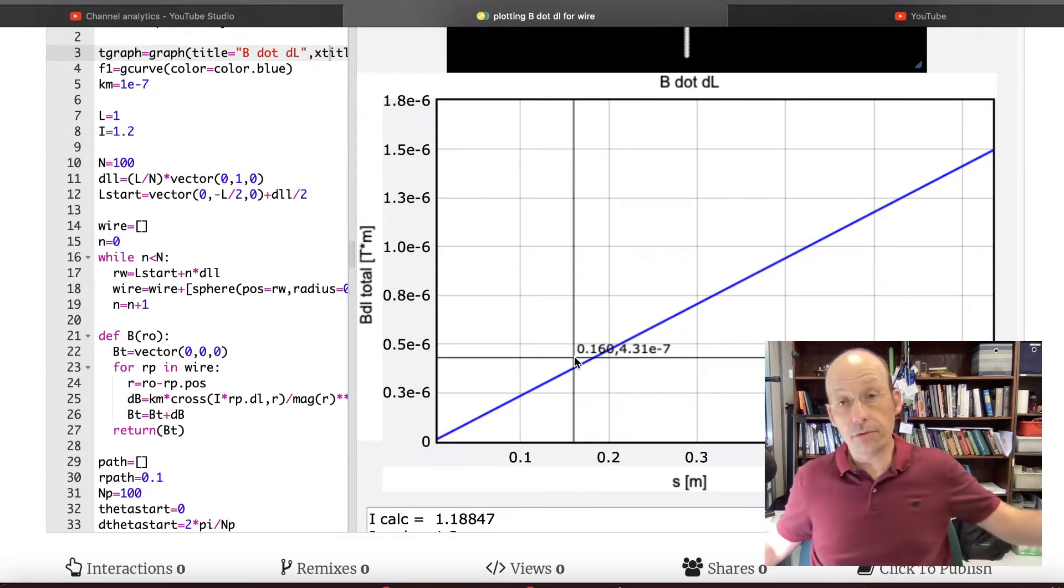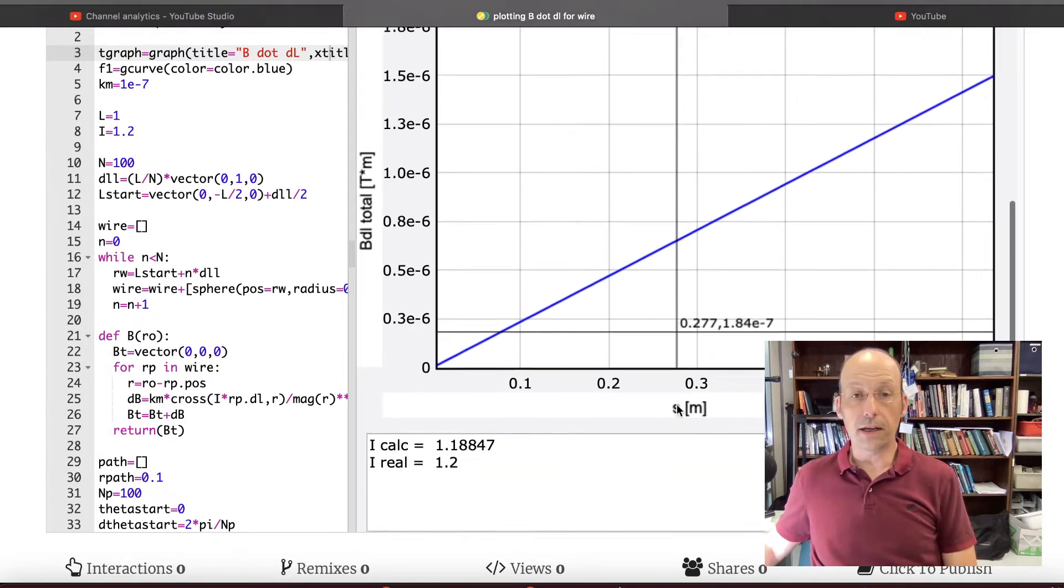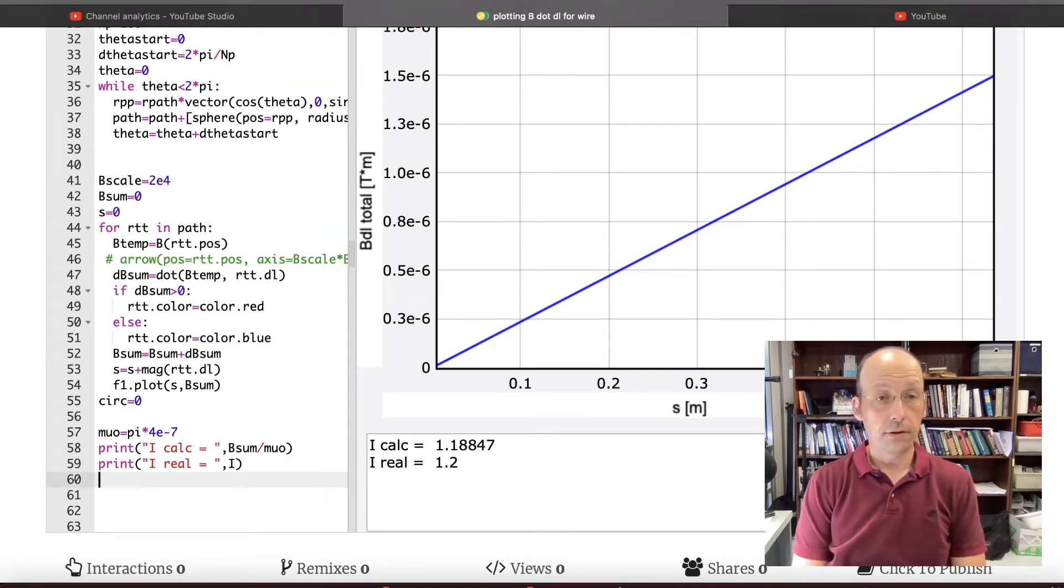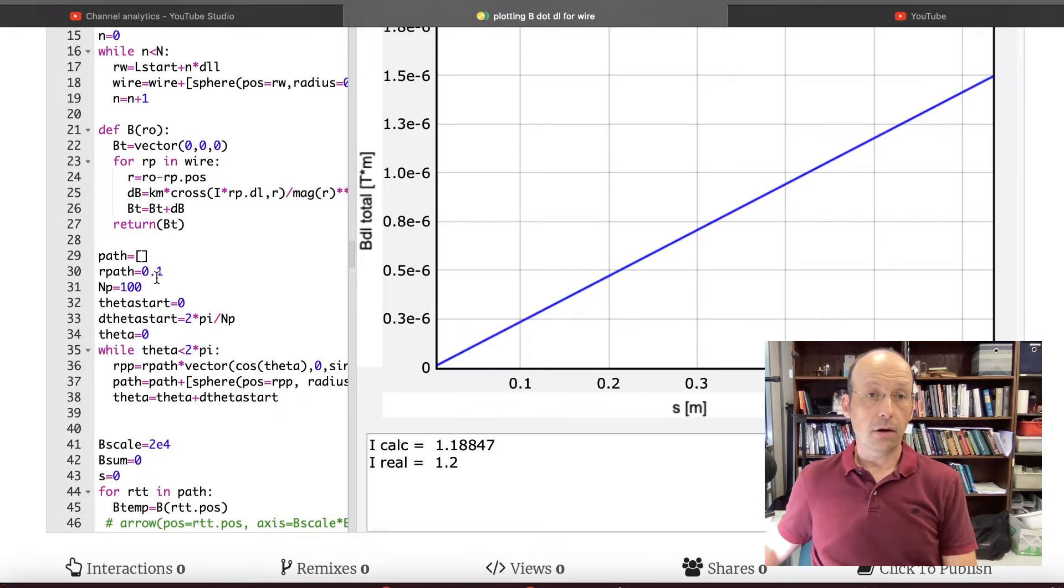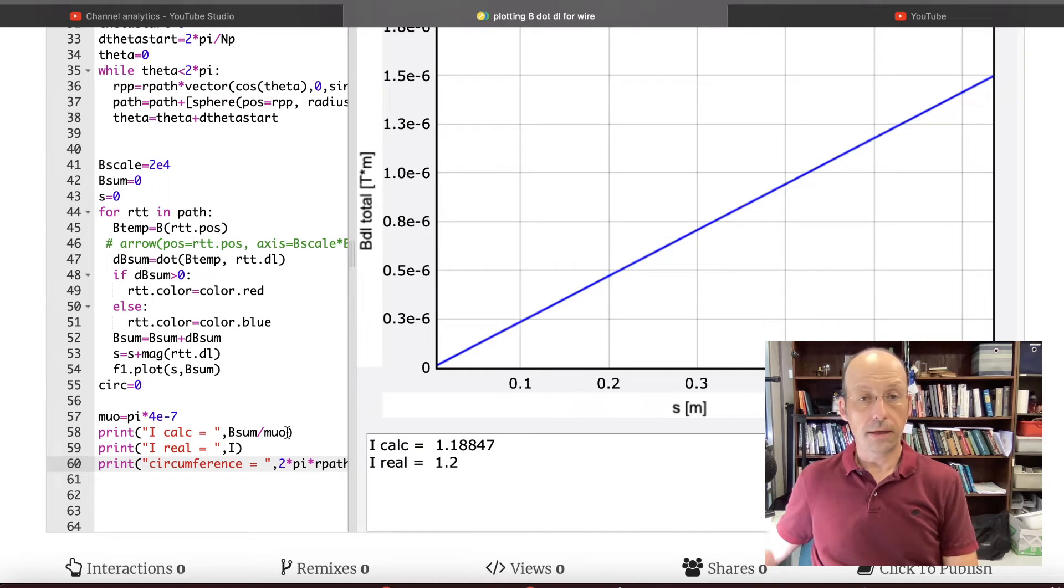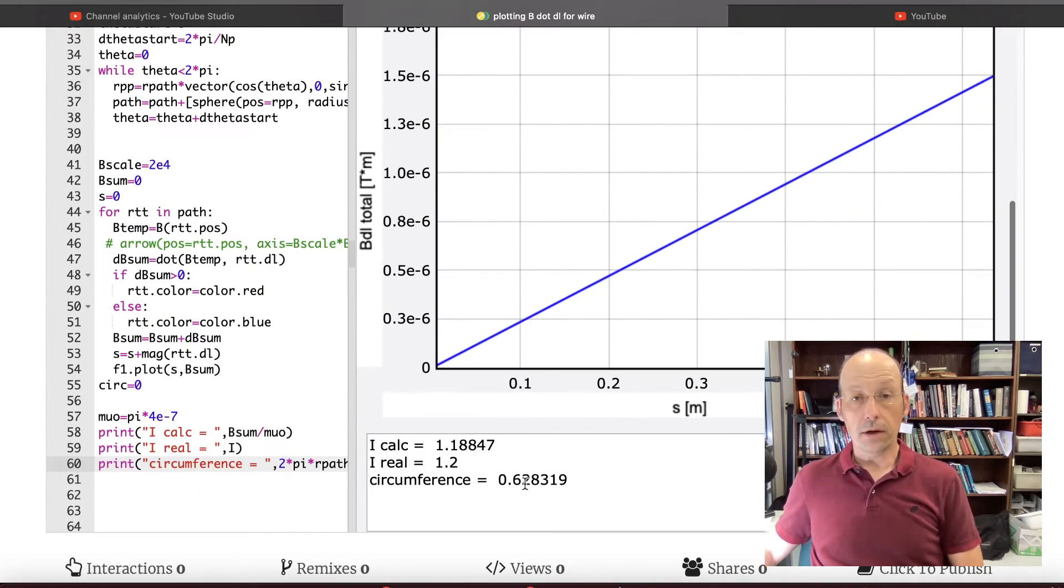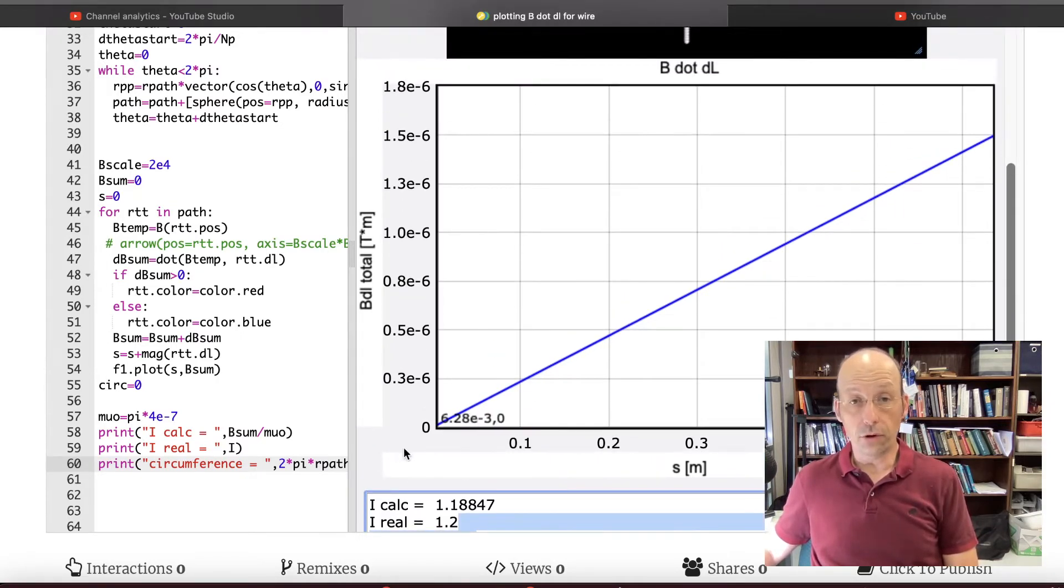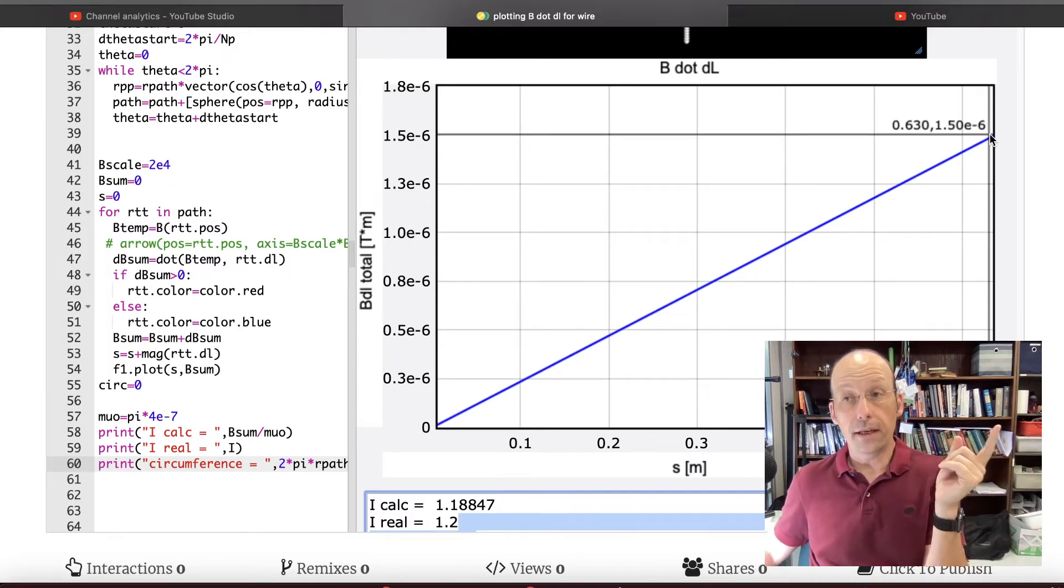Because this is why that integral is so easy. Because B dot DL is just the same amount each time. So as I go around the path, it adds up to something very easy. This distance should be the total radius of the circle. So this is the circumference of the circle. I have 0.6. Let's print that out. Let's print out circumference equals. It's going to be 2 times pi times the radius of my circle, which was path r path. Let's run that. And that's in meters, but I didn't put the units. Okay, yeah. So see, there you go. There's a circumference of the circle, 0.628. So that worked. That's going all the way around the circle. And then this is the total flux, which I need to multiply by or divide by mu naught to get i.